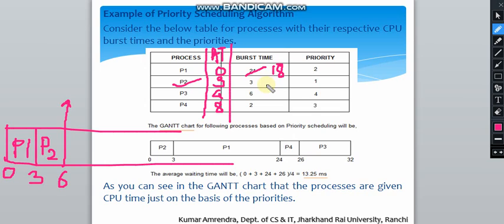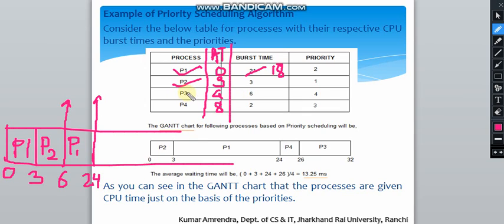At time 6, P2 is complete. We check which processes are available: P1 and P3 have arrived (P4 arrives at 8). Between P1 and P3, P1 has the highest priority, so P1 runs again completely — 18 seconds remaining, finishing at time 24. At time 24, P3 and P4 are both available; P4 has higher priority, so P4 runs for 2 milliseconds, completing at 26.